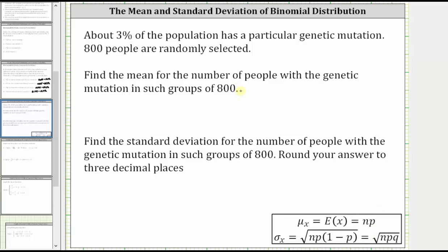Well, in our case, n is equal to 800 and p is equal to 3%. And therefore, the mean is equal to 800 times 3% as a decimal, which is 0.03, which is equal to 24.